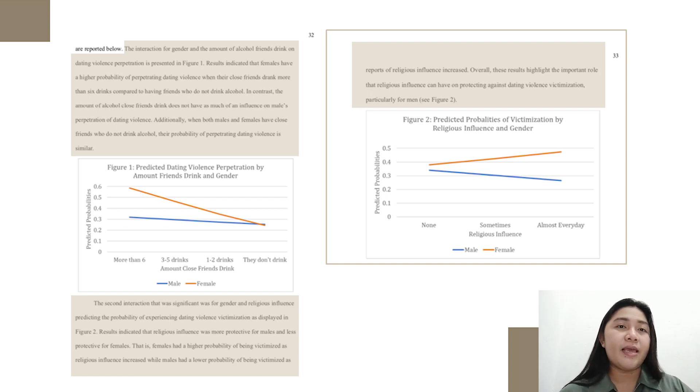Now, results indicated that females have a higher probability of perpetrating dating violence when their close friends drank more than 6 drinks compared to having friends who do not drink alcohol.